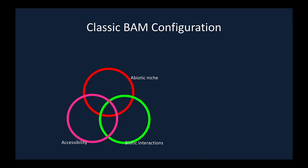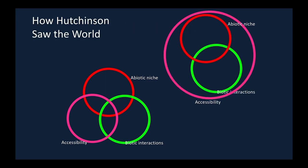That doesn't mean we always have an even overlap like the Olympic symbol. We might have something very different. Here's a BAM configuration where everything is accessible, but the abiotic and biotic have that same reduced overlap area. We can call this the Hutchinsonian configuration of the world, because G. Evelyn Hutchinson — another very important early voice in distributional ecology — kind of neglected the accessibility, the M consideration. He really talked only about the abiotic and the biotic, corresponding to the fundamental and realized niches in environmental space.